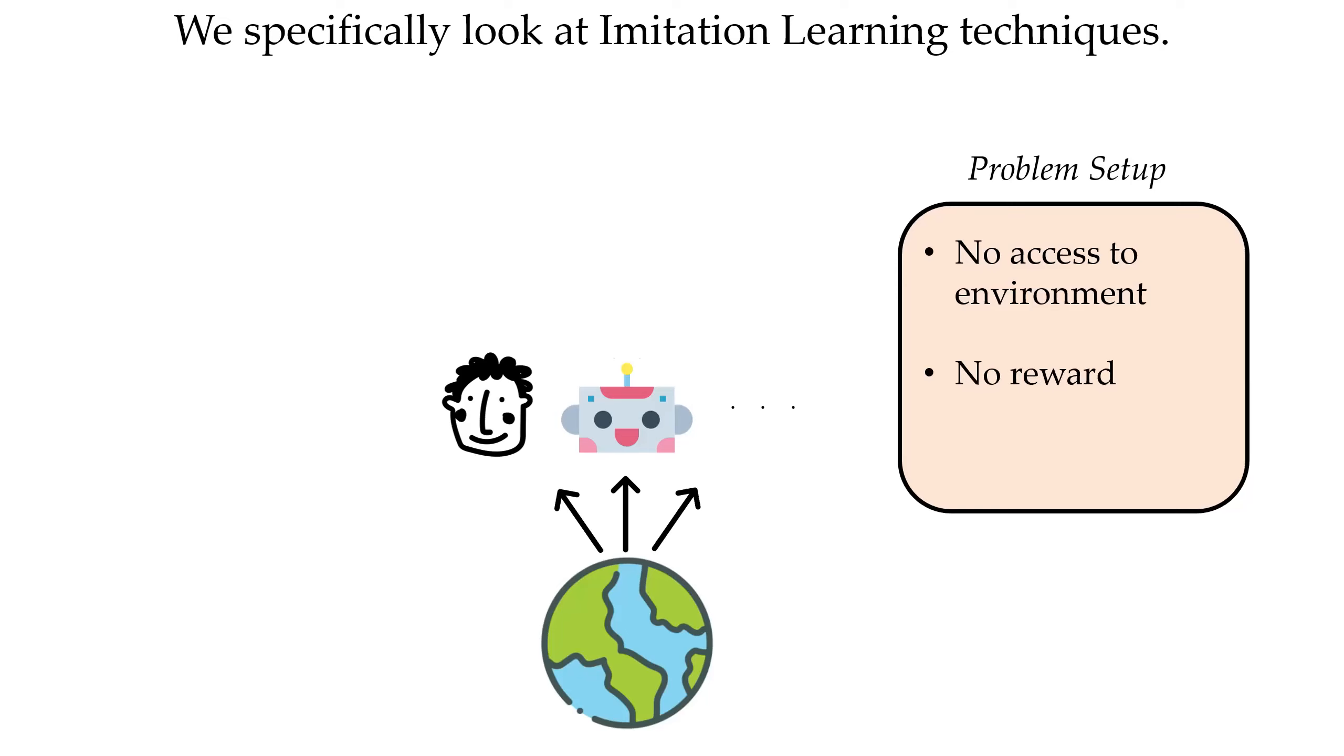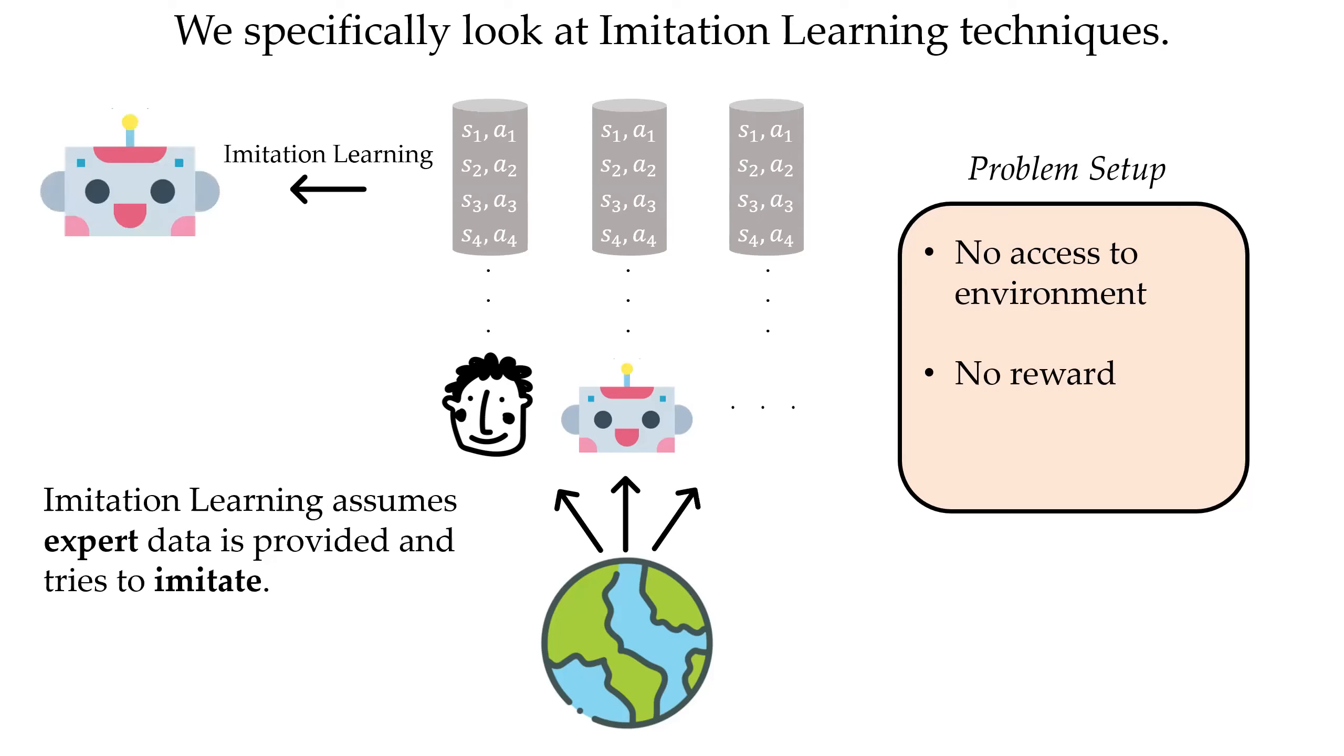Additionally, we do not have access to reward information and hence we collect demonstrations in the form of state action pairs. Imitation learning tries to solve this by recovering a policy that imitates the dataset, assuming that the observed behavior is optimal.